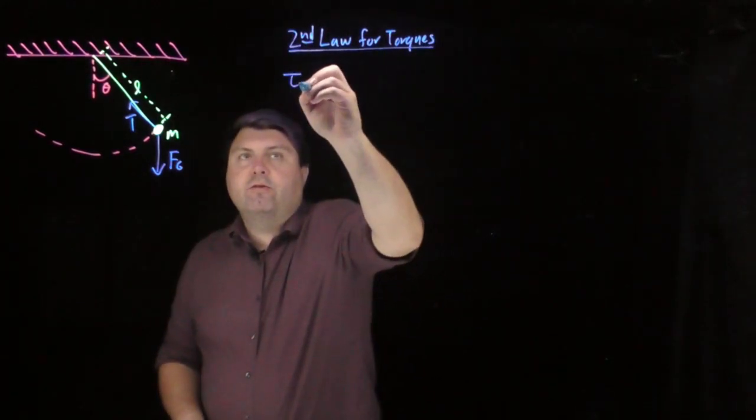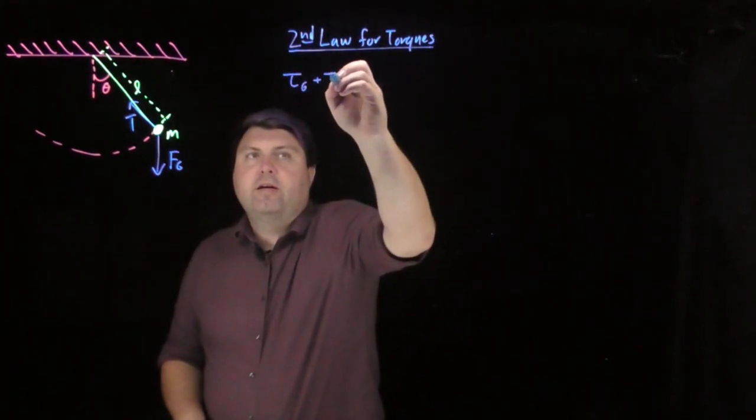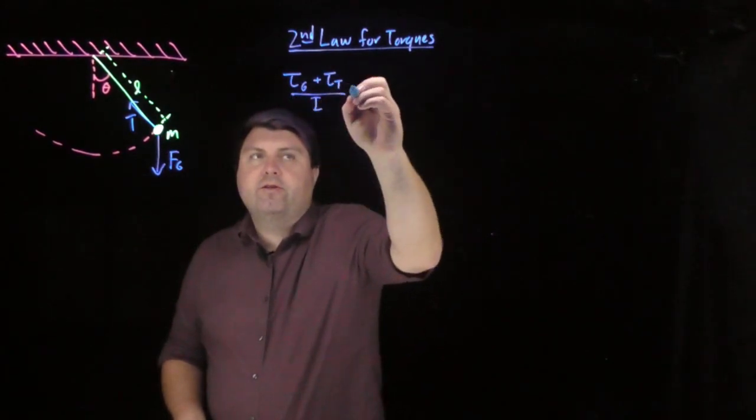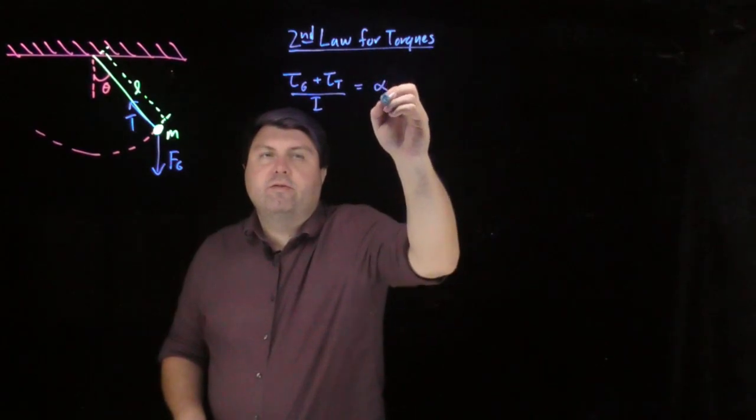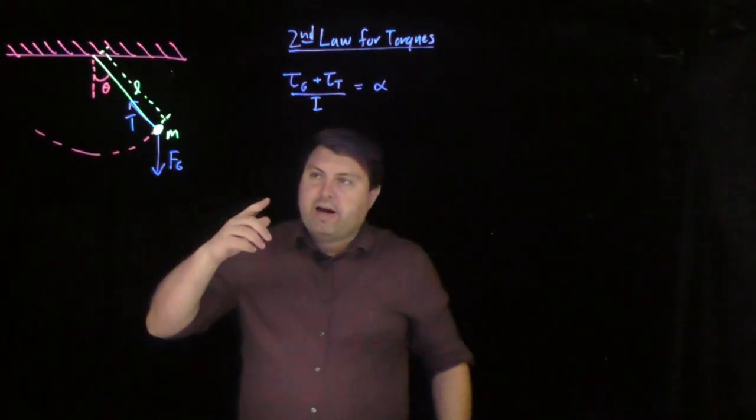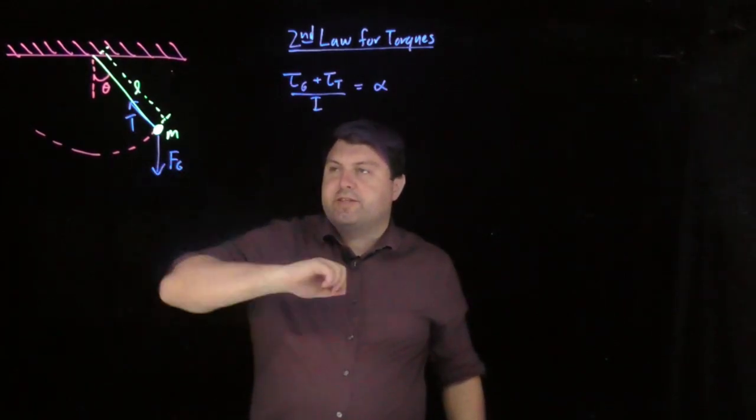Then we would have the torque from our gravity plus the torque from our tension over the moment of inertia is equal to the angular acceleration. Well, the torque from our gravity, our force of gravity is nice and constant.